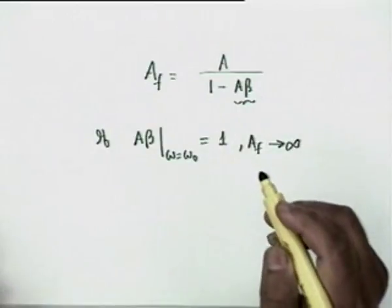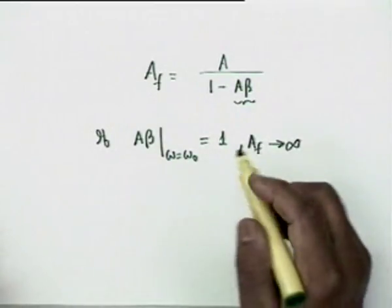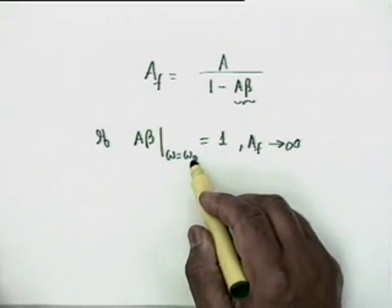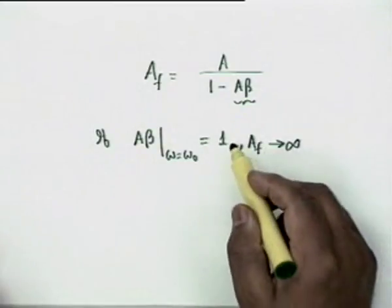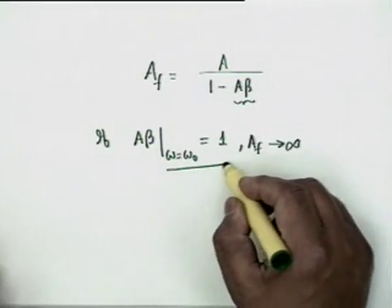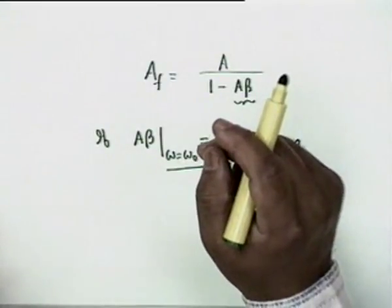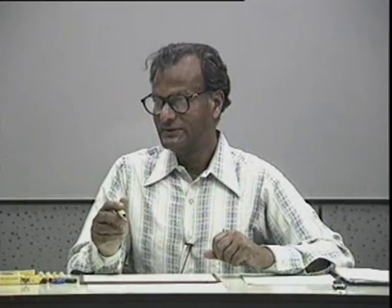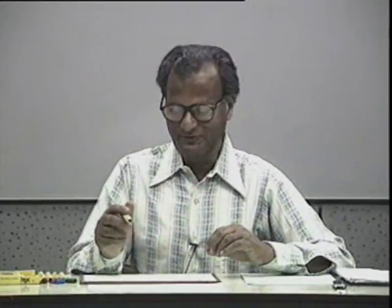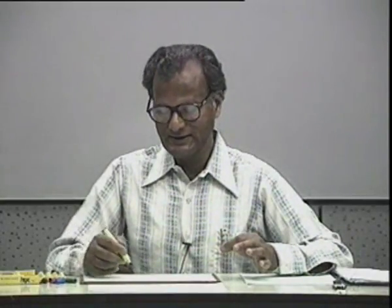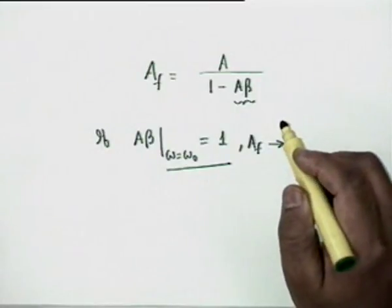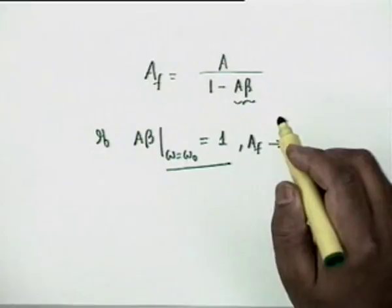The circuit oscillates at frequency ω₀. It may happen that besides ω₀ there are other frequencies at which this condition is satisfied, and all those frequencies shall be produced, giving a non-sinusoidal waveform decomposable by Fourier series. Even if the condition is satisfied at only one frequency, that is a critical condition. For starting oscillations, Aβ at ω = ω₀ should be slightly greater than unity, so that oscillations start and stabilize.